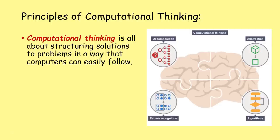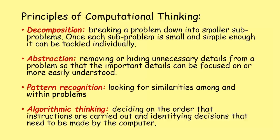Computational thinking is all about structuring solutions to problems in a way that computers can easily follow. That includes decomposition, abstraction, pattern recognition, and algorithms. Decomposition is breaking a problem down into smaller sub-problems - once each sub-problem is small and simple enough, it can be tackled individually. Abstraction is removing or hiding unnecessary details from a problem so that the important details can be focused on. Pattern recognition is looking for similarities among and within problems. Algorithmic thinking is deciding on the order that instructions are carried out and identifying decisions that need to be made by the computer.